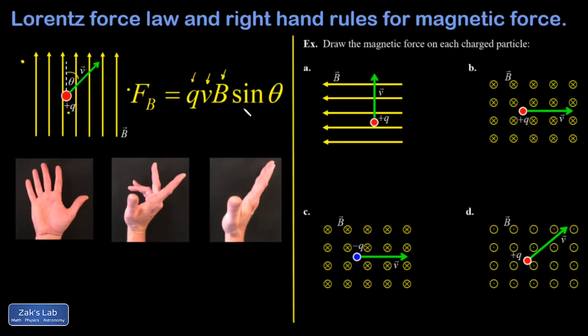And then it has this sine theta term in it, and what this does is it means that the magnetic force is going to be zero if the velocity is parallel to the magnetic field, because that would make this angle zero. And it's going to be maximized if the angle is 90 degrees.